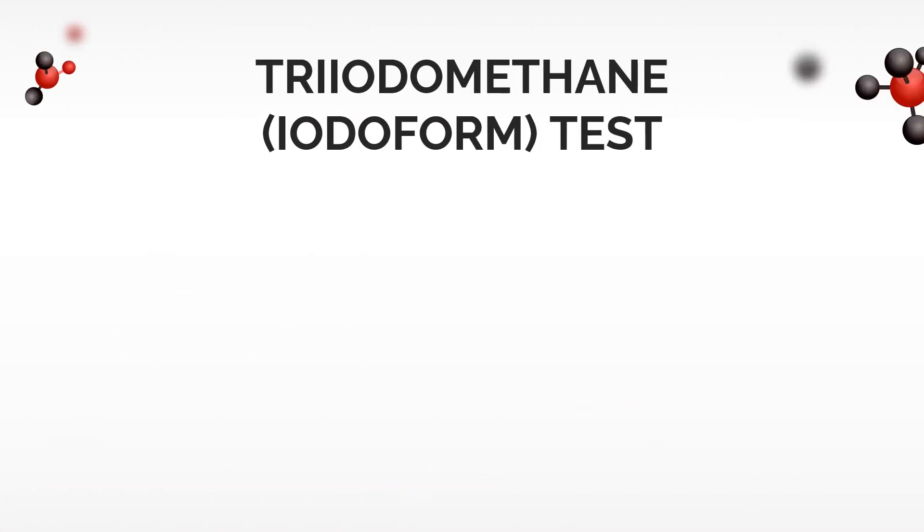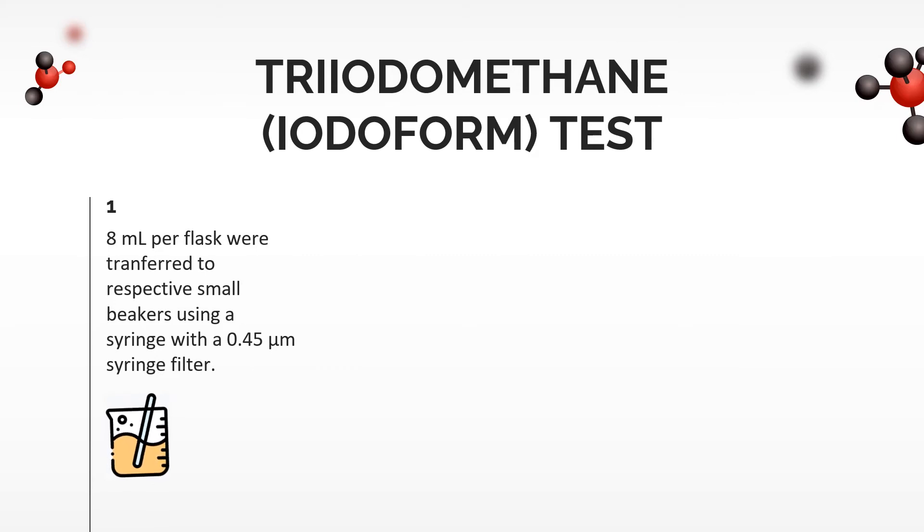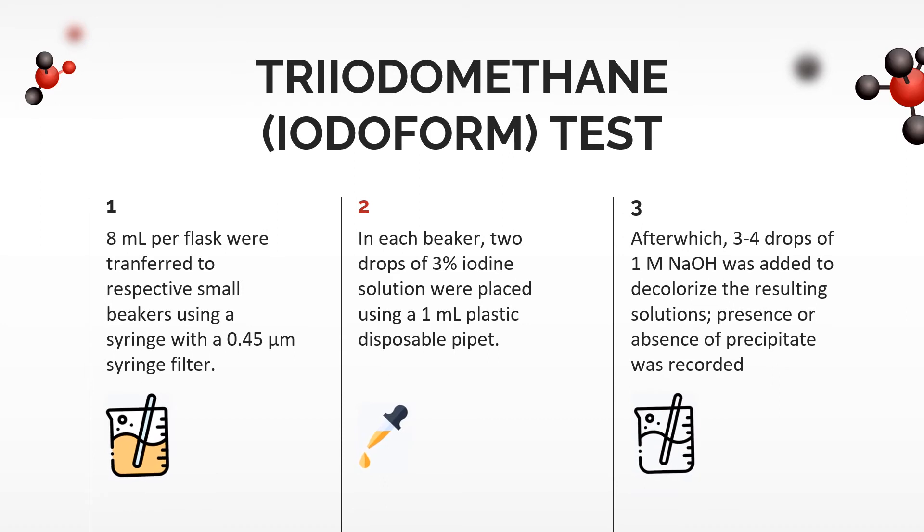After the gas measurements have been completed, we can test for the presence of ethanol using the tri-iodomethane test. Using a 10 ml syringe, 8 ml of material from the cultures were transferred and expelled through a 0.45 micrometer syringe filter into respective beakers. Using a 1 ml plastic disposable pipette, 2 drops of 3% iodine solution were introduced into each beaker to oxidize any ethanol present. Lastly, 3-4 drops of 1 molar sodium hydroxide was added to decolorize the resulting solutions, and the presence or absence of precipitate was recorded.